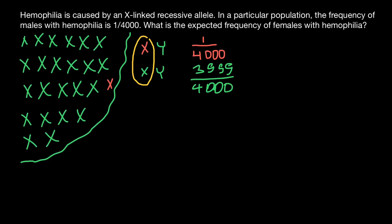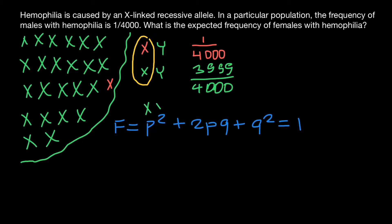We can use Hardy-Weinberg equilibrium, where the frequency of the three genotypes produced by two alleles equals p² + 2pq + q², and all this equals one, because females have two X chromosomes. A female can be homozygous normal, heterozygous, or homozygous recessive. The probability of being homozygous recessive is q².